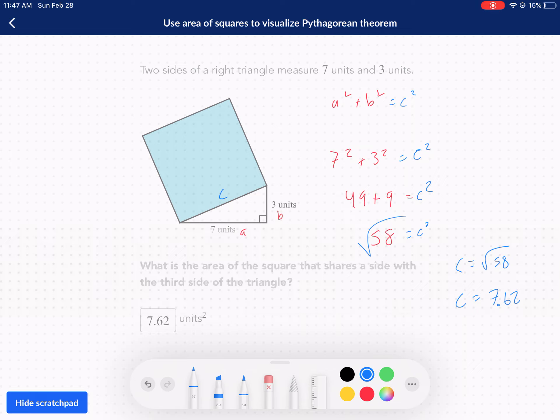It's asking for the area of the square. I'm so sorry. It's not looking for the side length. It's just asking for that whole square. So that just means 58.